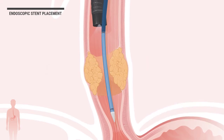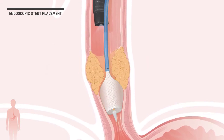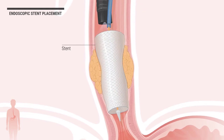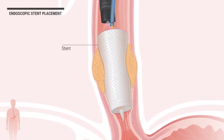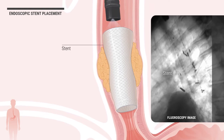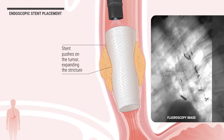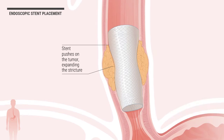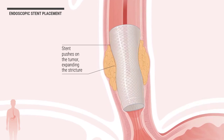Next, the endoscopist slowly pulls off the outer sheath of the catheter, allowing the stent to expand into the lumen of the esophagus, while observing through an endoscope and using fluoroscopy. The stent pushes on the tumor, expanding the stricture created by the tumor, and thereby reopening the lumen.